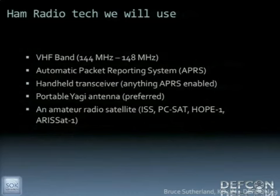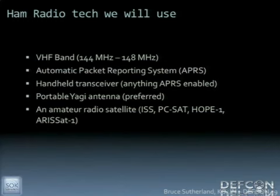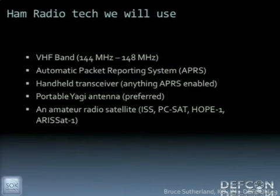The technology we're going to use is in the VHF band, between 144 and 148 megahertz. We're going to use a system called Automatic Packet Reporting System, or APRS. It's a digital system transported over AX.25 protocol — an amateur radio version — runs at about 1,200 baud, and is good for the short messages we'll be sending. APRS has a few packet types; the message packet is what we're concerned with.